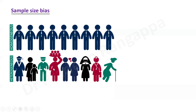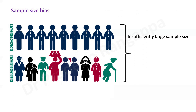Sample size bias occurs when there is too much heterogeneity in the population. A homogeneous population is good, but if the population is too heterogeneous — where every patient is different — this can influence study findings. This typically happens when the sample size is insufficiently large, leading to imprecise estimates. Publication bias is another type, where studies are biased towards certain regions or sections of society — a problem seen globally in clinical practice. These are some of the more common biases seen in clinical practice.